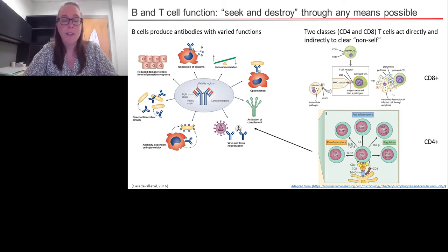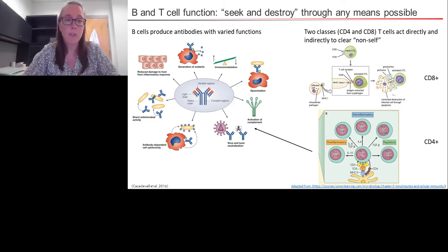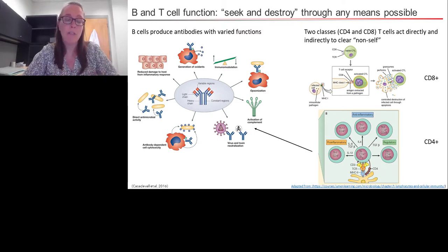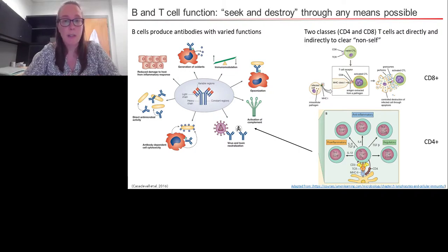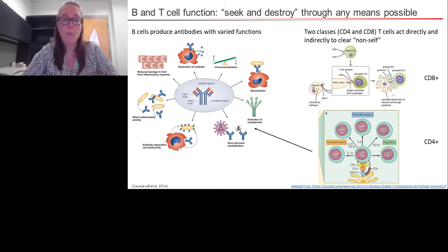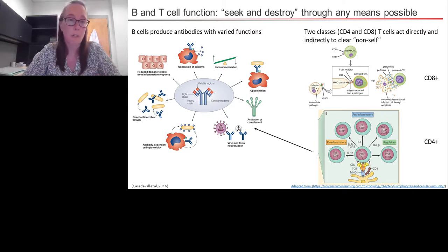B cells specifically produce antibodies, and it's the antibodies that are the effector molecules of that arm of the immune system. They are myriad and specialized. T cells also have a very specialized route of attack, and the T cell population can be divided broadly into two classes: CD4 or helper T cells, and CD8 or cytotoxic T cells. CD8 T cells, after recognizing antigen very specifically, release granzymes and perforin to directly destroy infected cells. CD4 cells detect antigen and produce helper molecules or signaling assistance to spur other parts of the immune system — they can be pro-inflammatory, anti-inflammatory, or regulatory. Together, their antigen specificity allows us to clear pretty much anything that comes to our system.